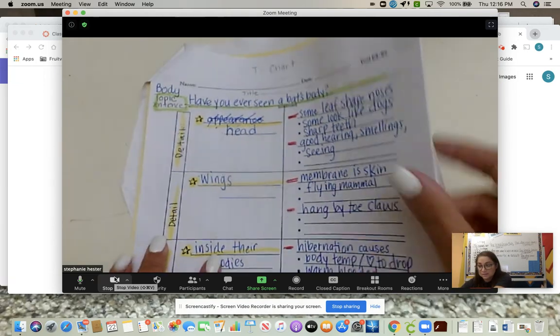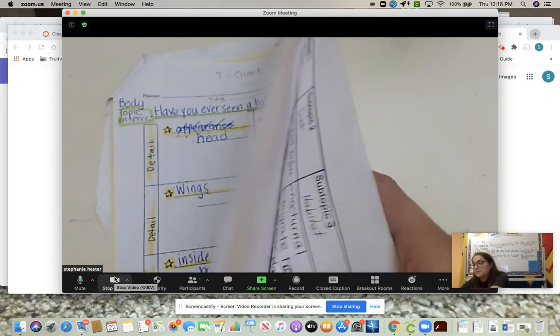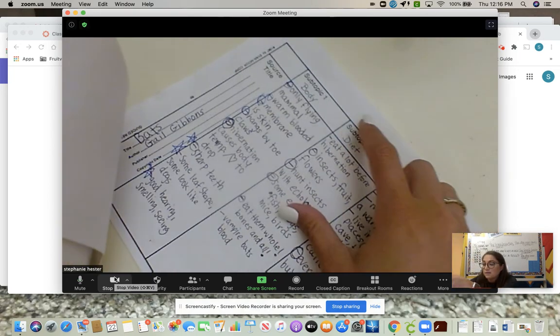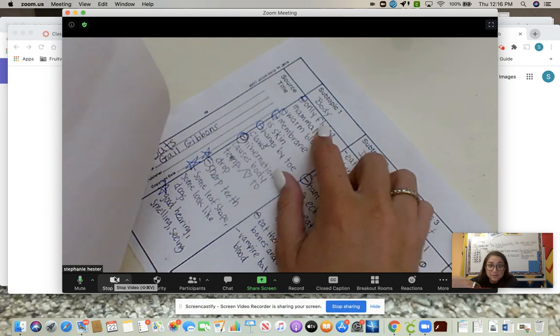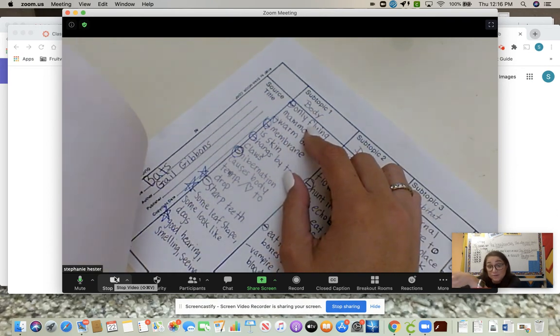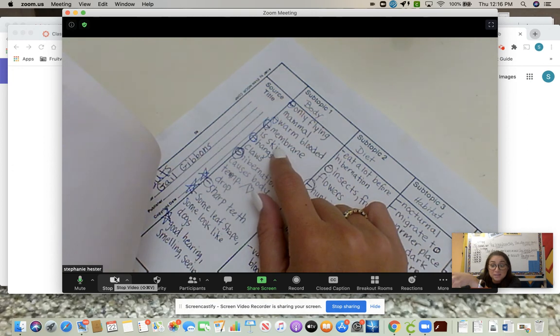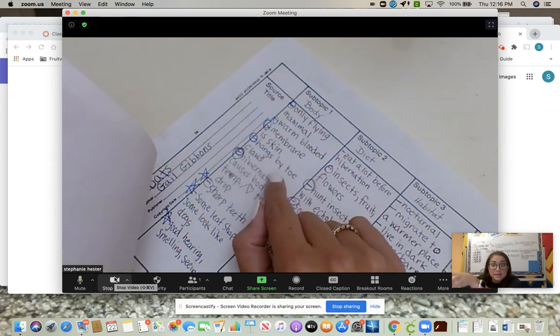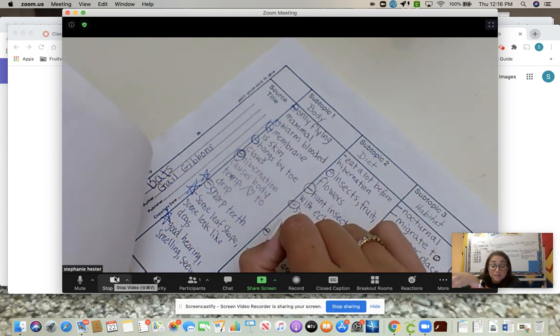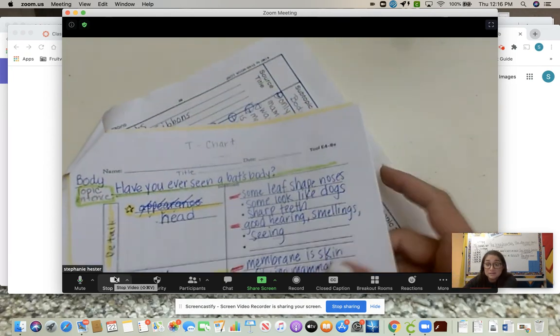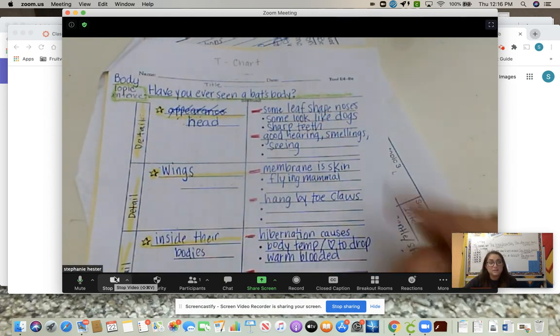Then we moved on to their wings. What notes did we take that are specific to their wings? We have that they're the only flying mammal. Their membrane is their skin, so that's between their bones and their wings. They hang by their toe claws. That's what their toe claws are on their wings. So that's what we wrote down for red.